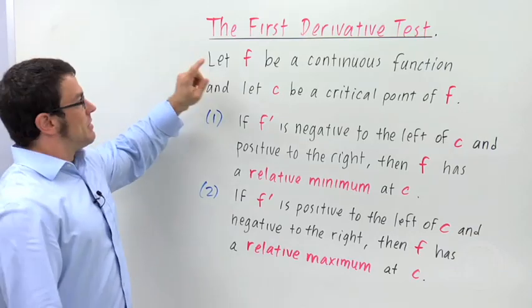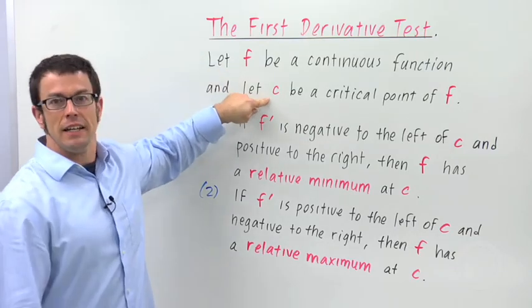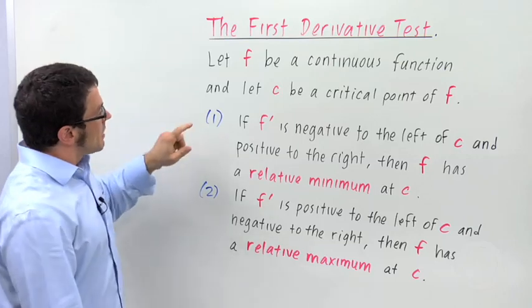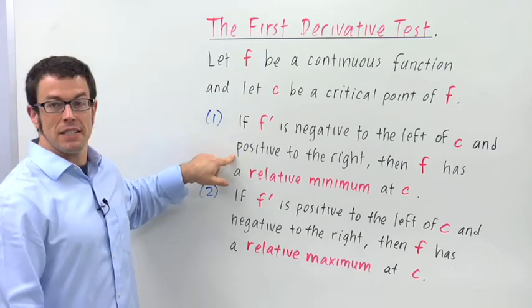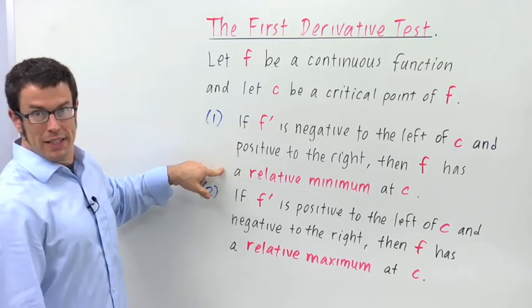And it starts out assuming that f is a continuous function and c is one of its critical points. If f prime is negative to the left of c and positive to the right, then f has a relative minimum at c.